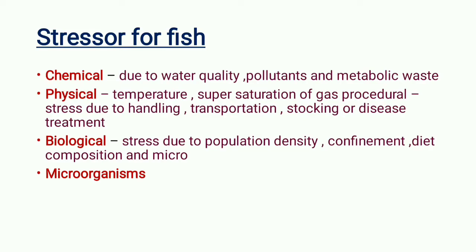These are the biological factors — how stress can happen in fish. The chemical factor includes water quality and pH. Physical factors include temperature, handling, and transportation. Biological factors include population density and diet composition.